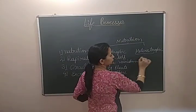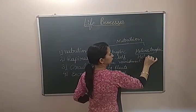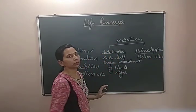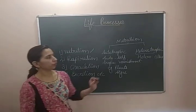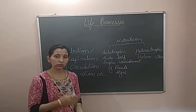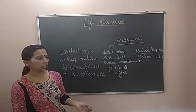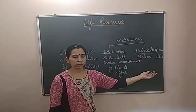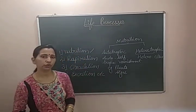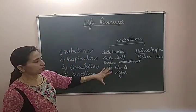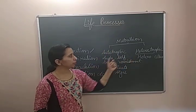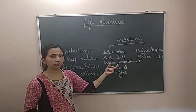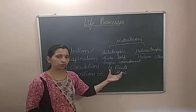Heterotrophic: 'hetero' means other and 'trophic' again means nourishment. This is the type of nutrition in which the organism depends on another organism for nourishment. It includes organisms like animals and fungi, which do not contain chlorophyll for the photosynthesis process.